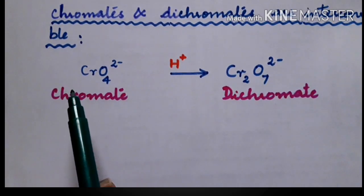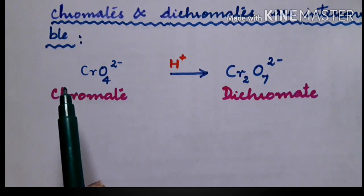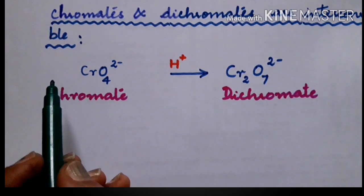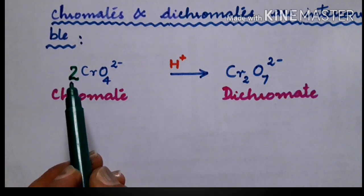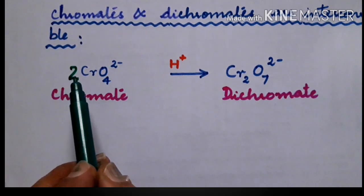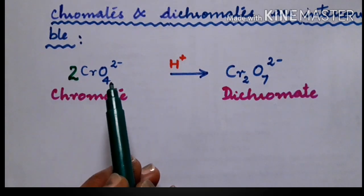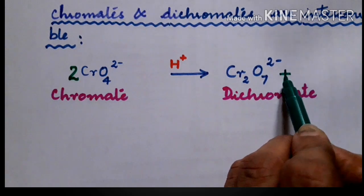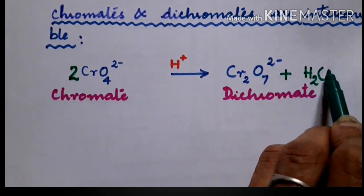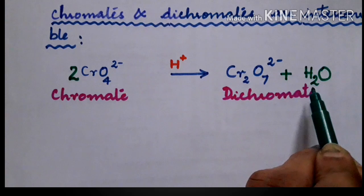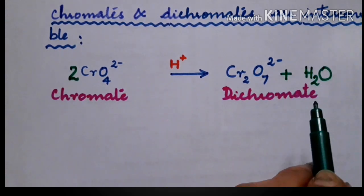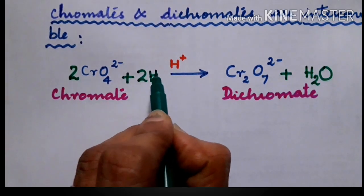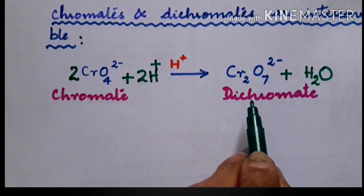Check the number of chromium atoms on the left side — only one. On the right side there are two, so make it two. Oxygen becomes eight on the right side but we have only seven on the left, so we need to add a molecule of water. Then the number of hydrogens become unequal on both sides, so add the required number of H+ ions. This gives the balanced equation.